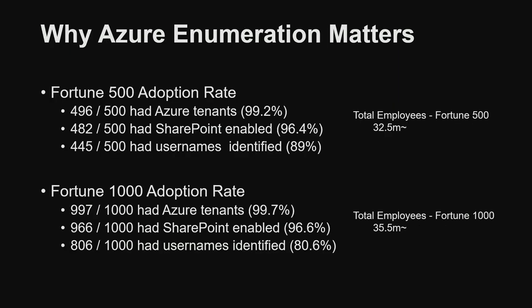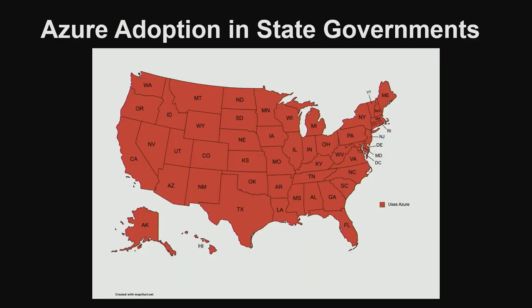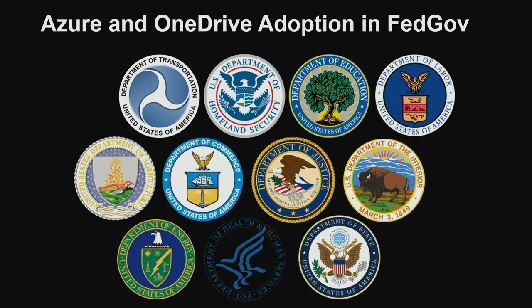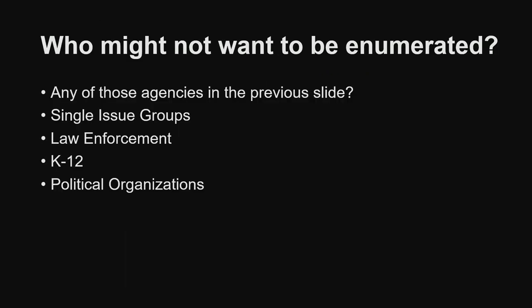It really matters in Azure because nearly everybody uses Azure. In the Fortune 500, for instance, 99% have Azure tenants — whether they use them or not. Out of those, 96% had SharePoint enabled, and I've identified valid usernames via OneDrive in 89% of the Fortune 500. It's widespread. Every state government uses Azure. Federal government agencies use Azure. Everything has the same vulnerability built in with OneDrive and other user enumeration methods.